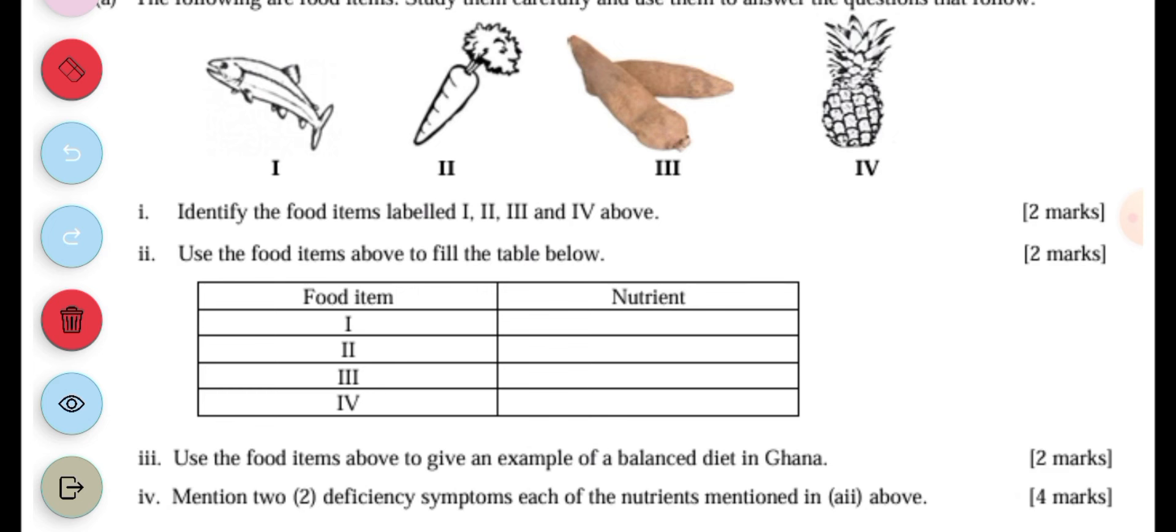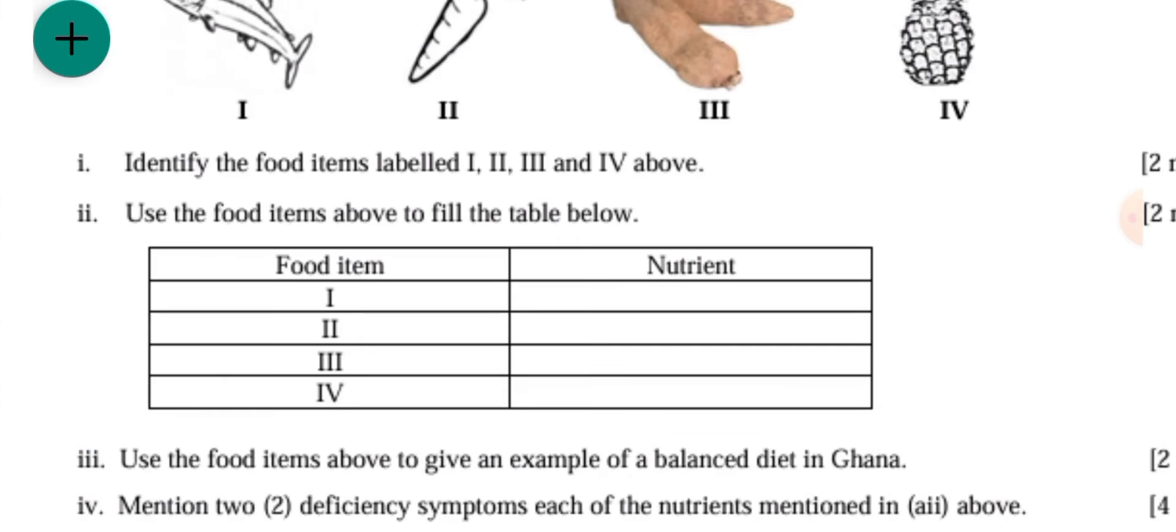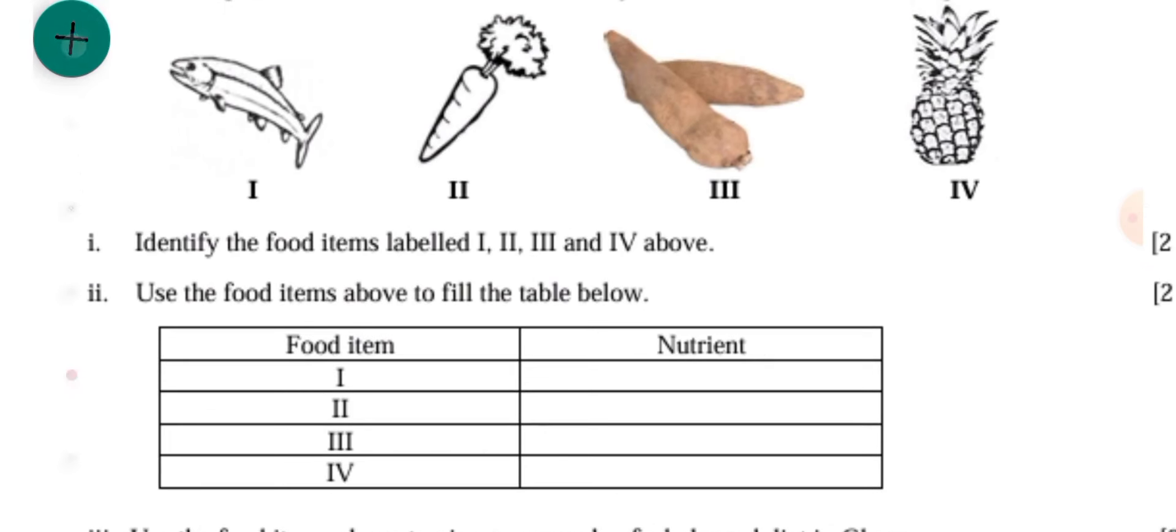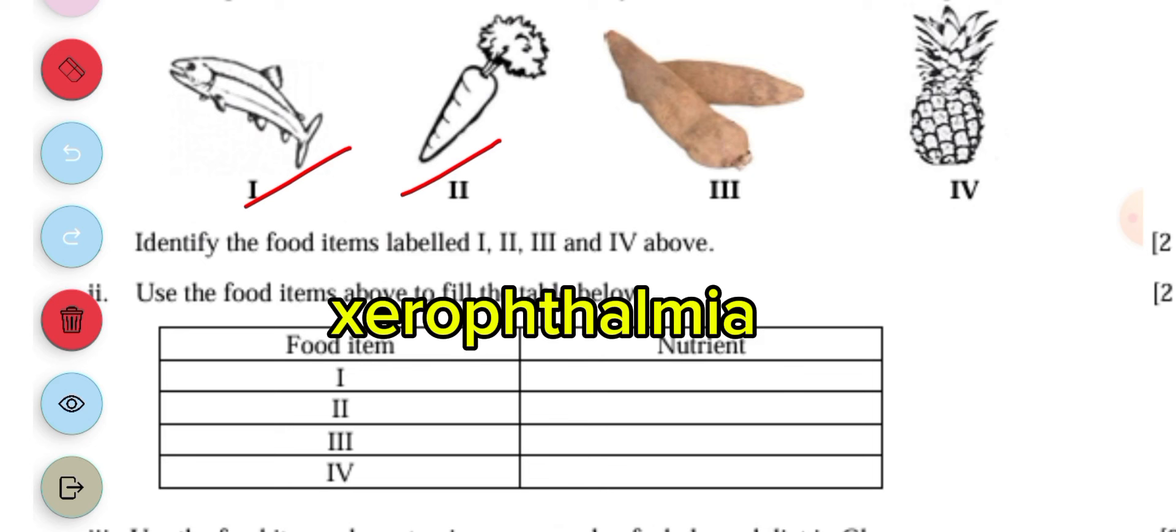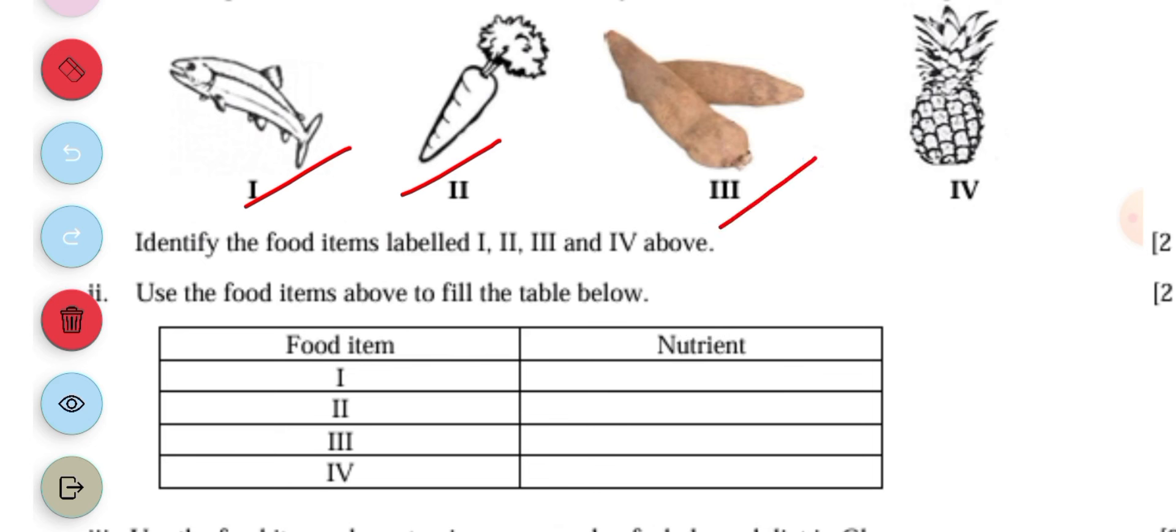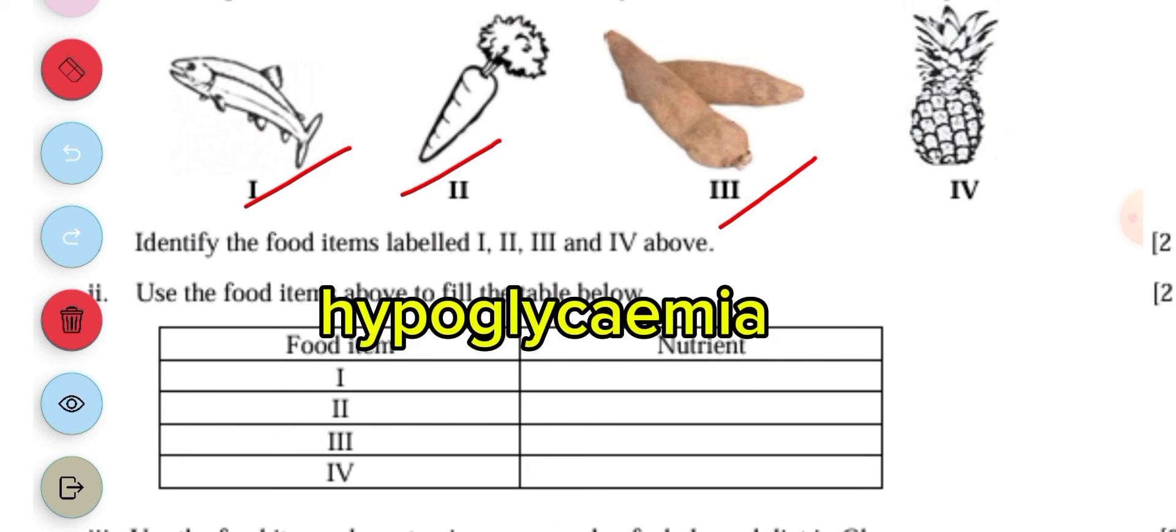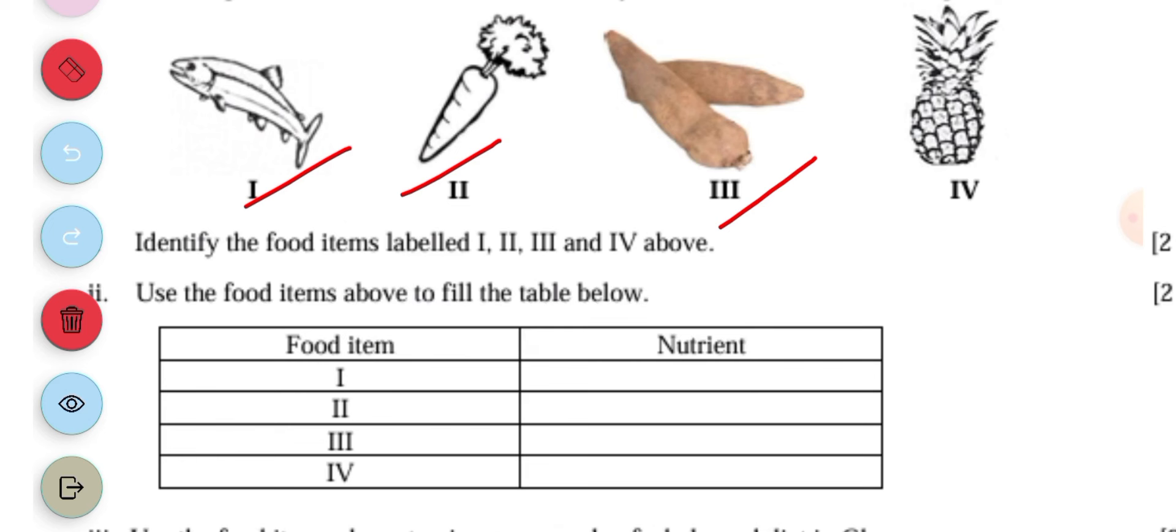IV says, mention food deficiency symptoms of each of the nutrients mentioned above. The deficiency for protein is kwashiorkor and marasmus. For vitamin A it's night blindness. Lack of carbohydrates will lead to hypoglycemia and also fatigue or dizziness. And lack of vitamin C will lead to scurvy and also slow wound healing.